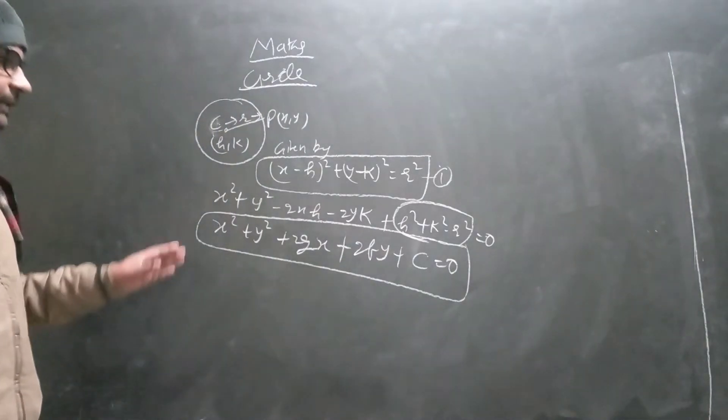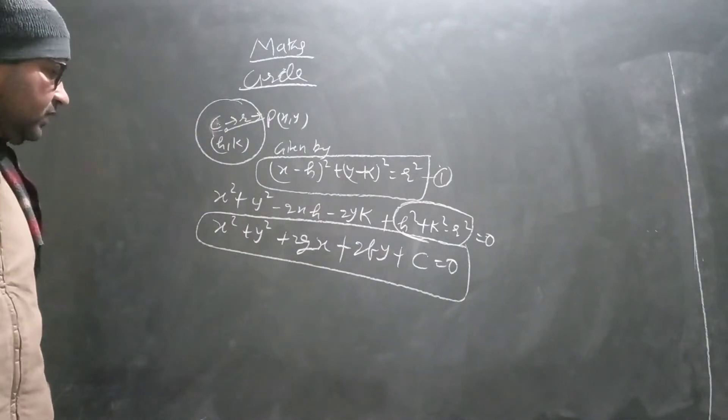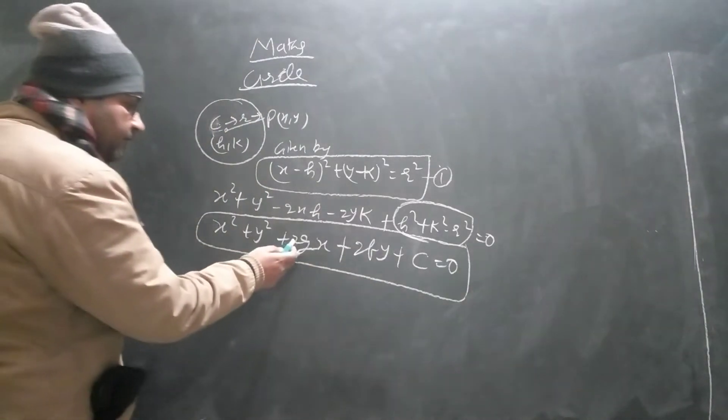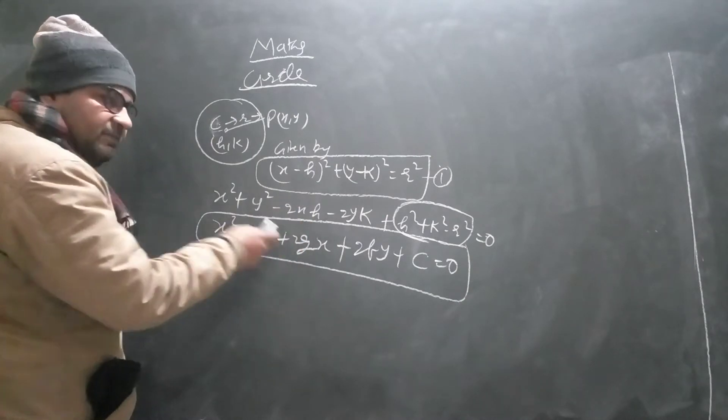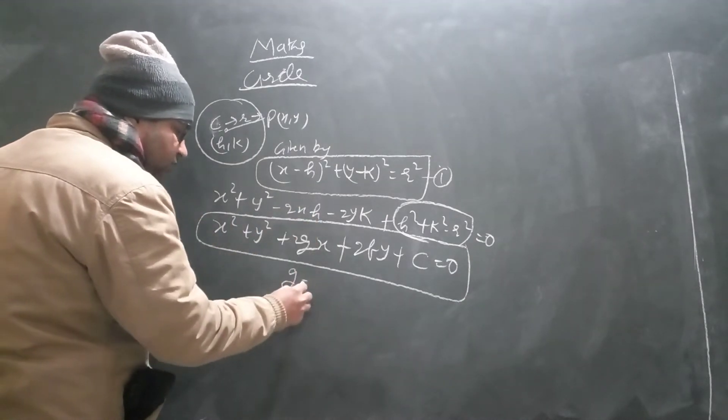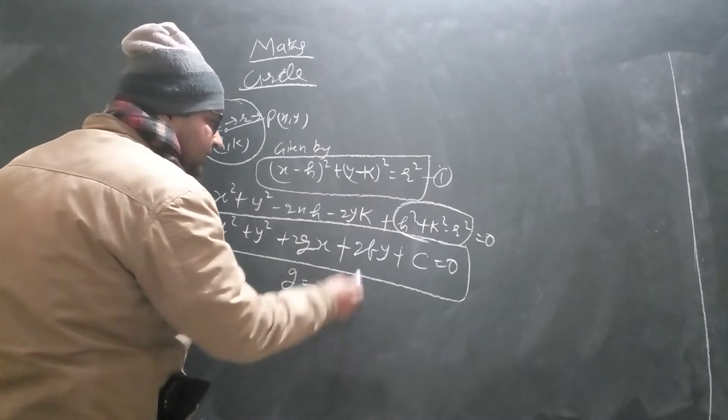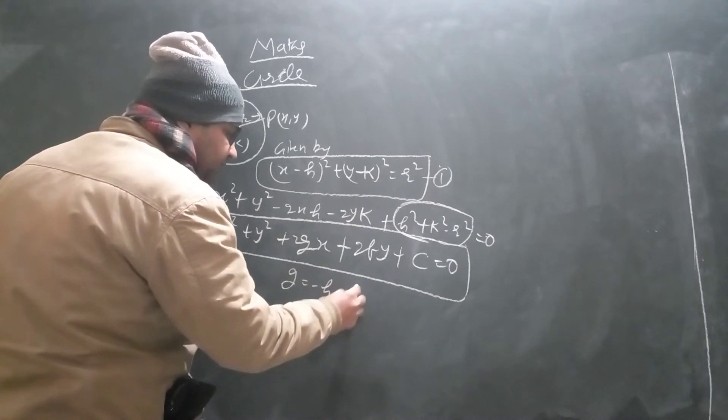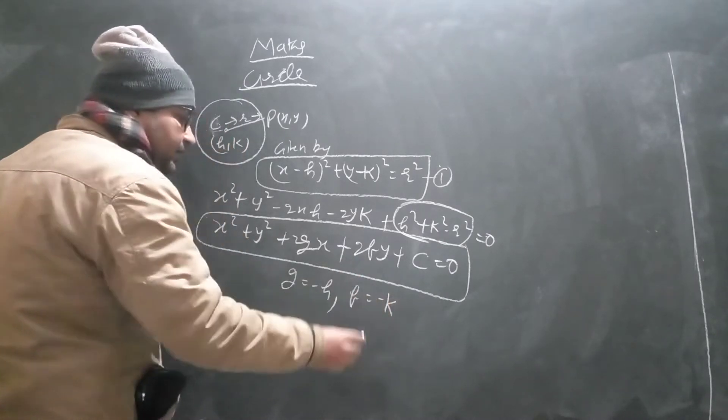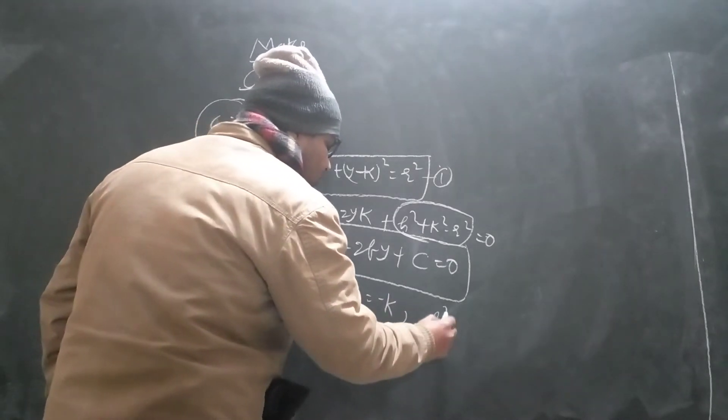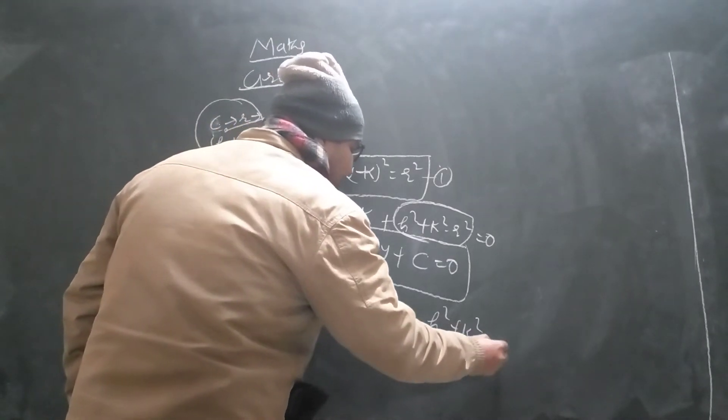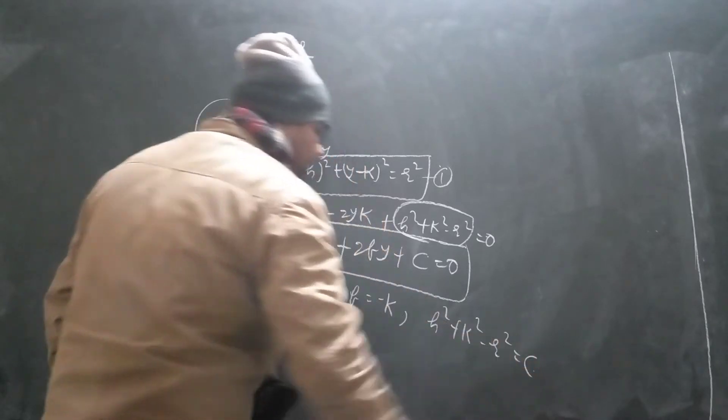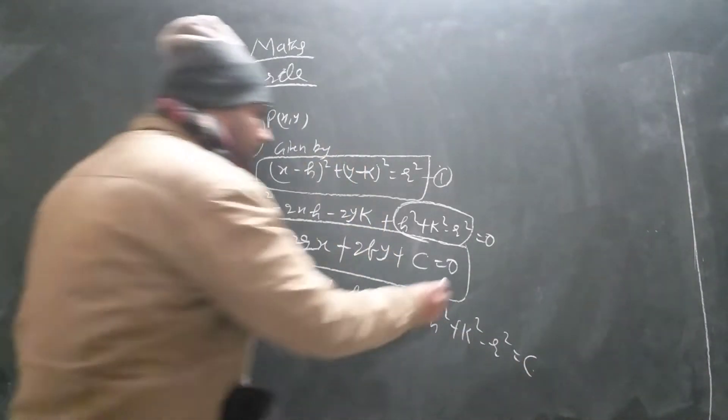So here we have a circle equation expanded form. Here you will find, once we made comparison between the two equations, where G is equal to minus H, F is equal to minus K, and this complete constant term, after simplification, reduces to C.